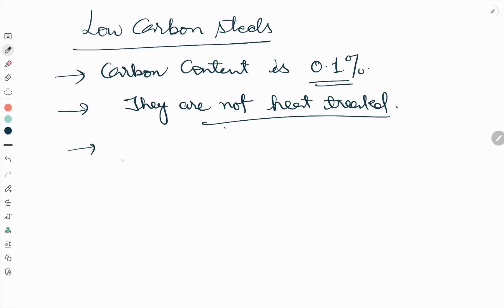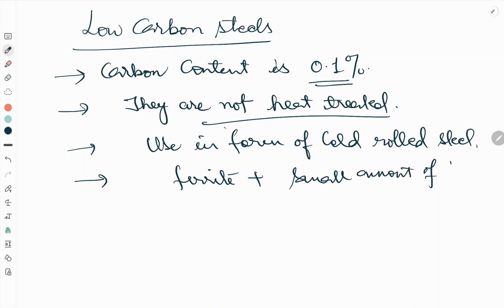They are used in the form of cold rolled steel. The microstructure consists of ferrite plus a small amount of pearlite.